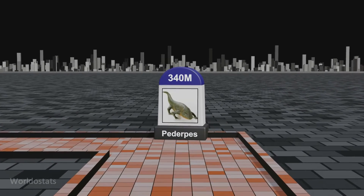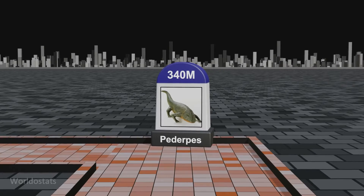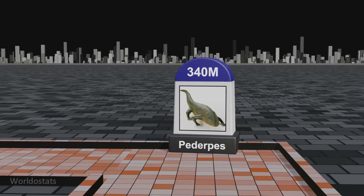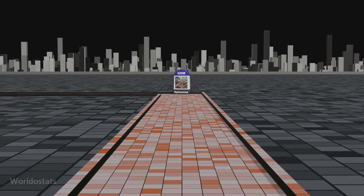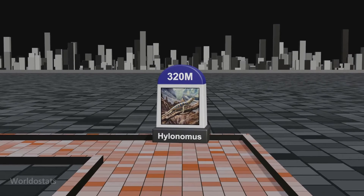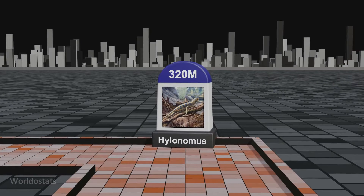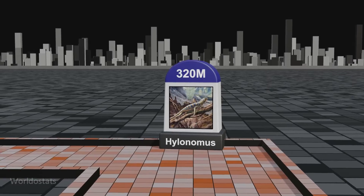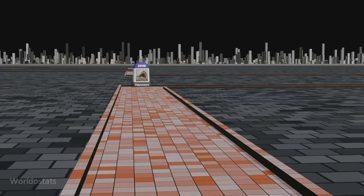Pederpes, an early tetrapod from the Late Devonian period approximately 350 million years ago, played a role in the evolutionary transition of vertebrates from water to land, showcasing adaptations for both environments. Hylonomus, dating back to 315 million years ago, holds the distinction of being the earliest known reptile, representing a pivotal point in the evolutionary history of vertebrates.